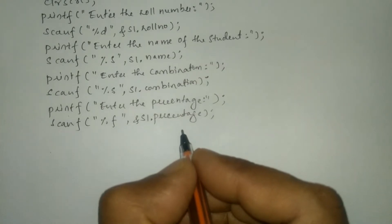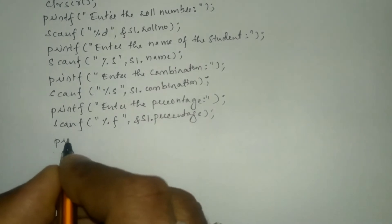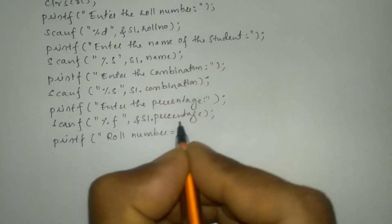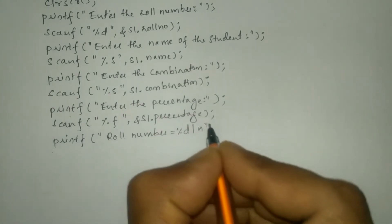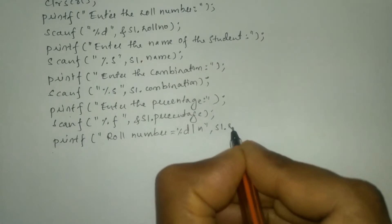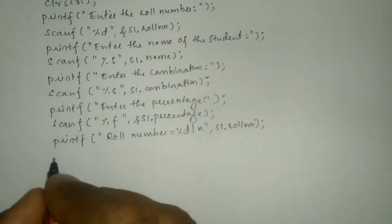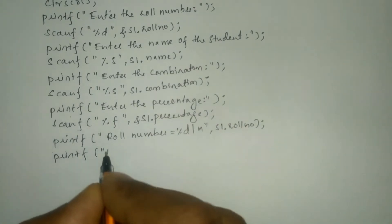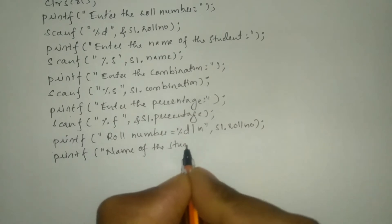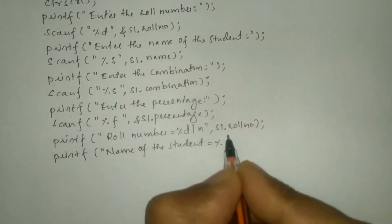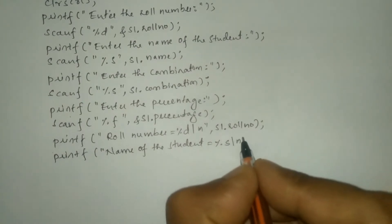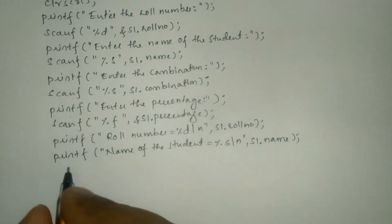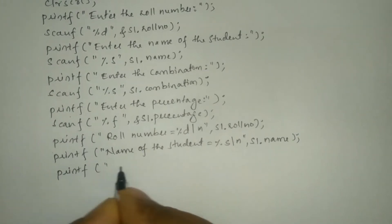Now we are going to print what we have entered using printf statements. Here I'm going to write printf, in double quotation marks: roll number is equal to, then %d, backslash n, end double quotation mark, comma s1 dot roll number and semicolon. Similarly I'm going to write printf for name of the student: name of the student is equal to %s, backslash n, end double quotation mark, comma s1 dot name and semicolon.